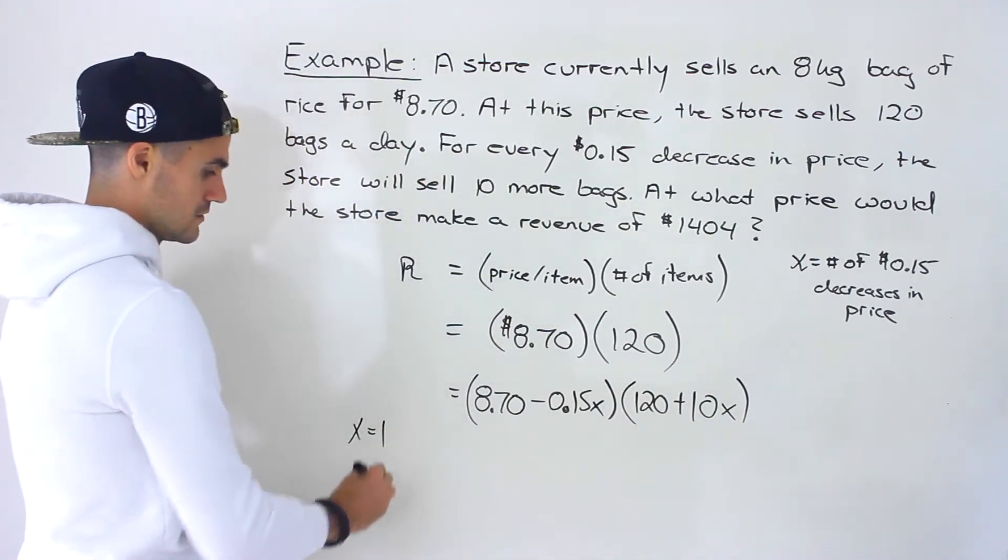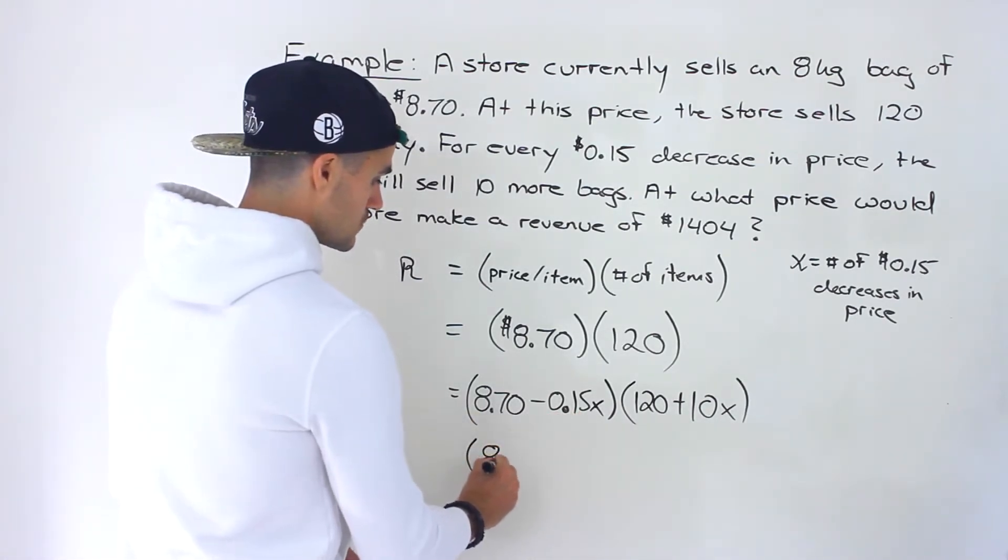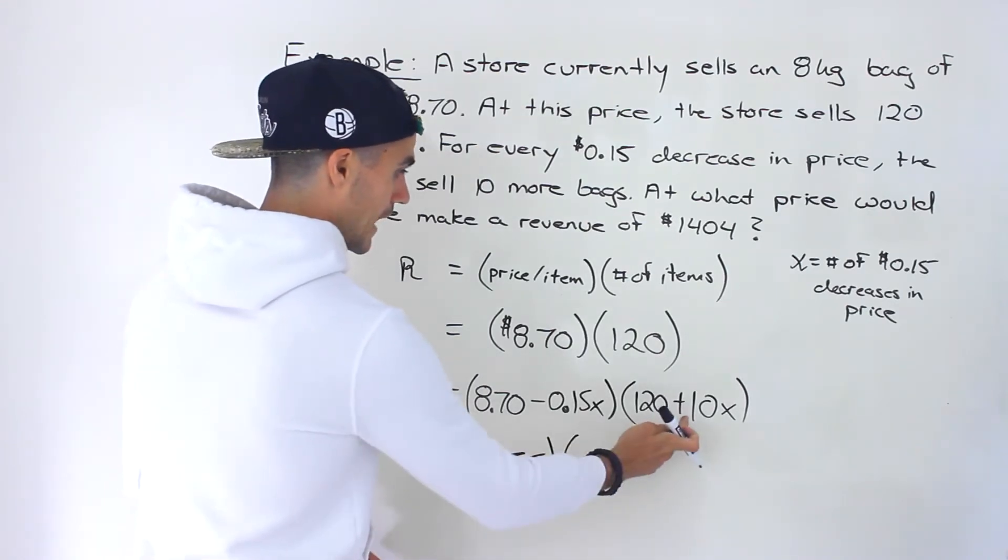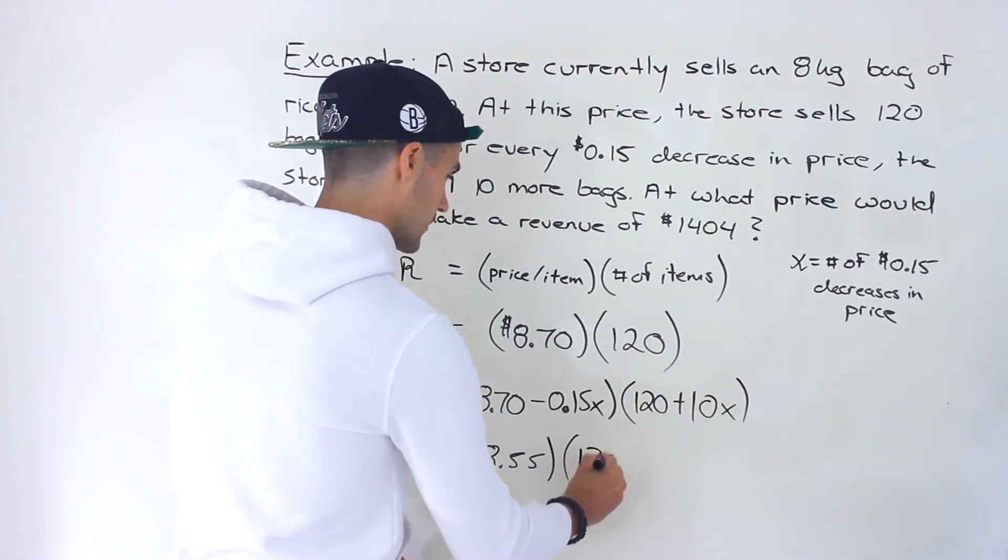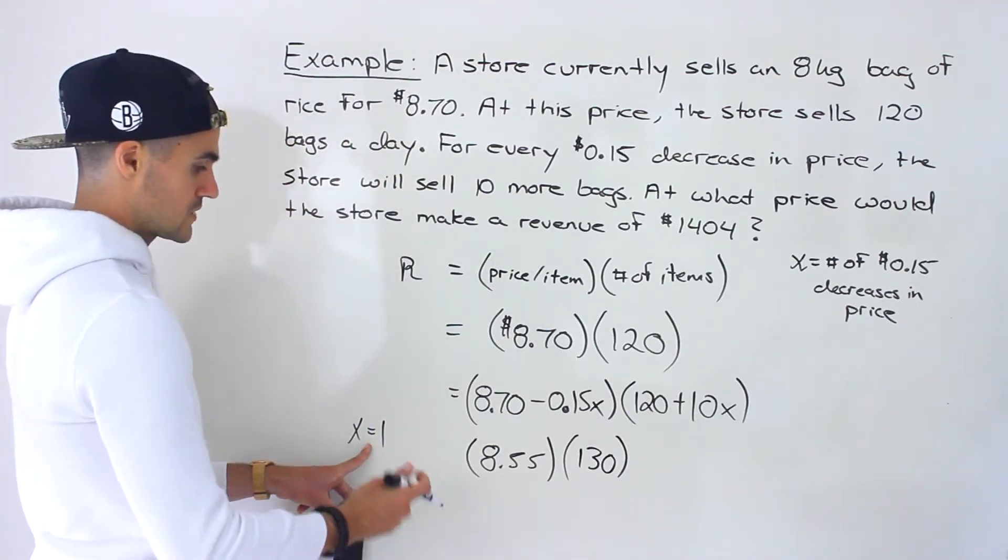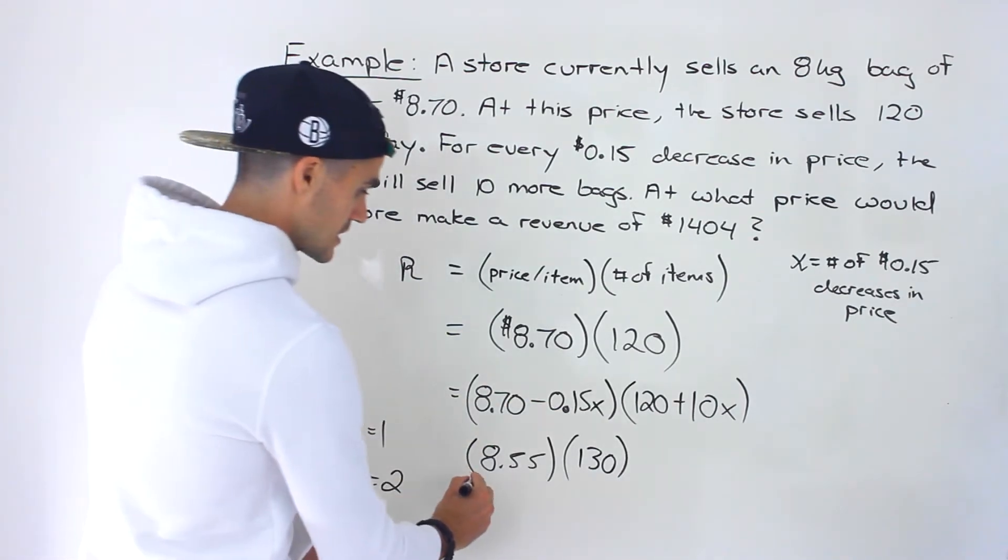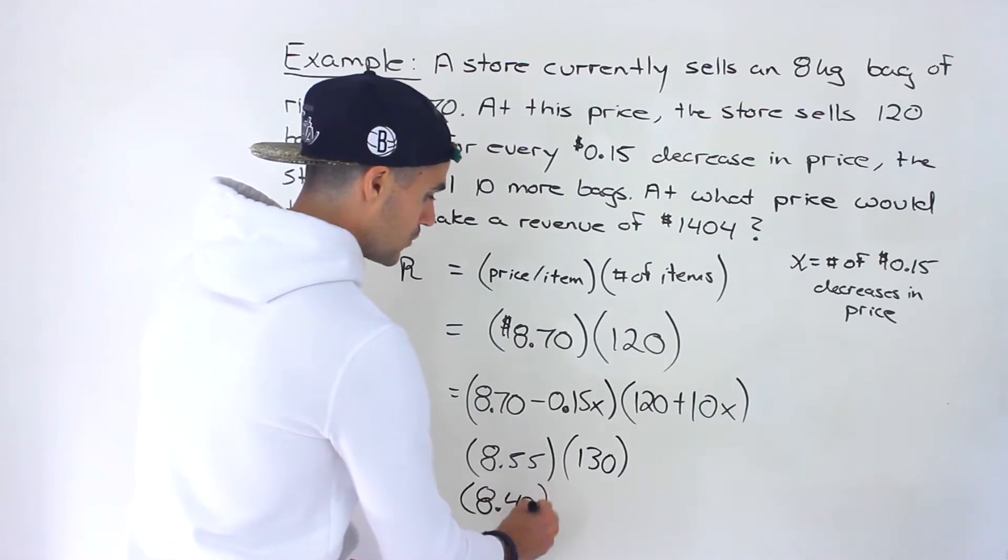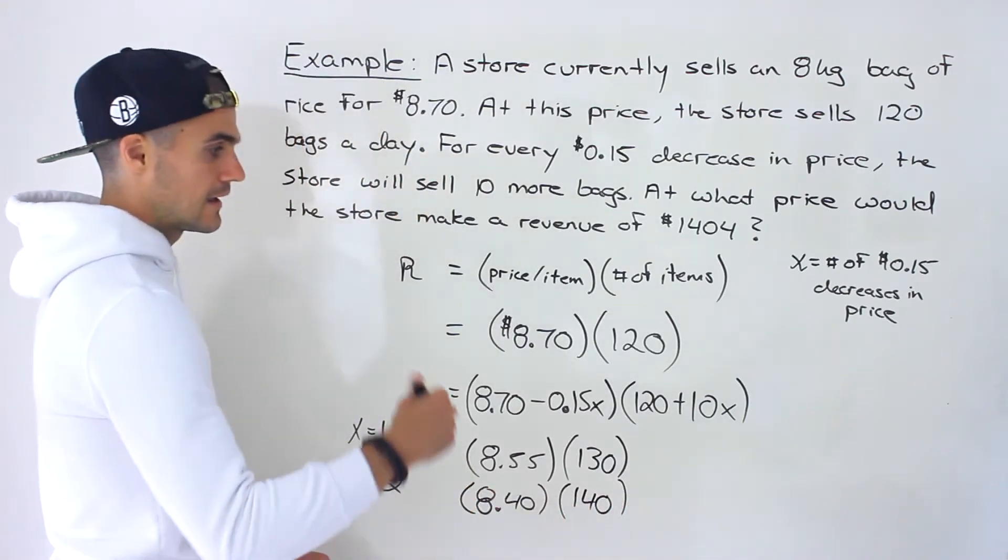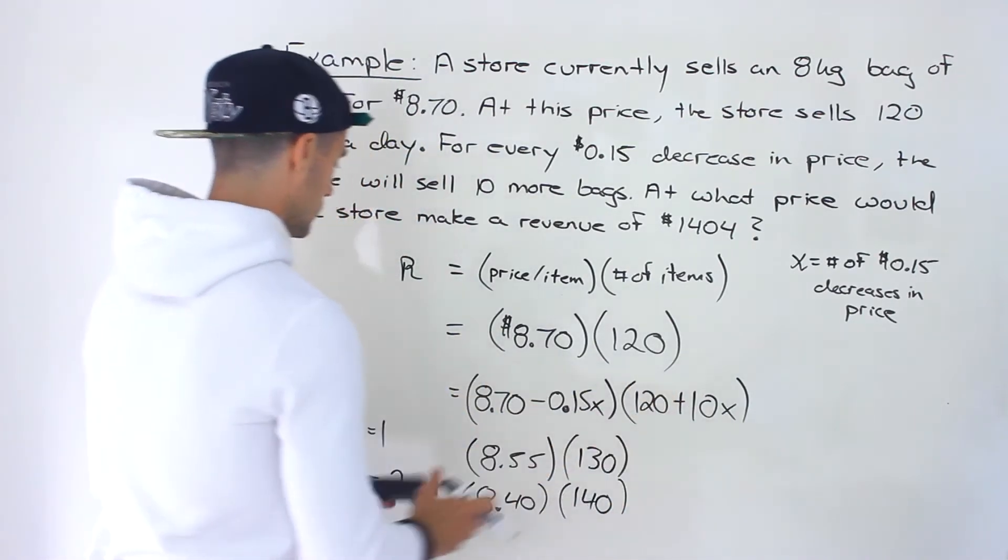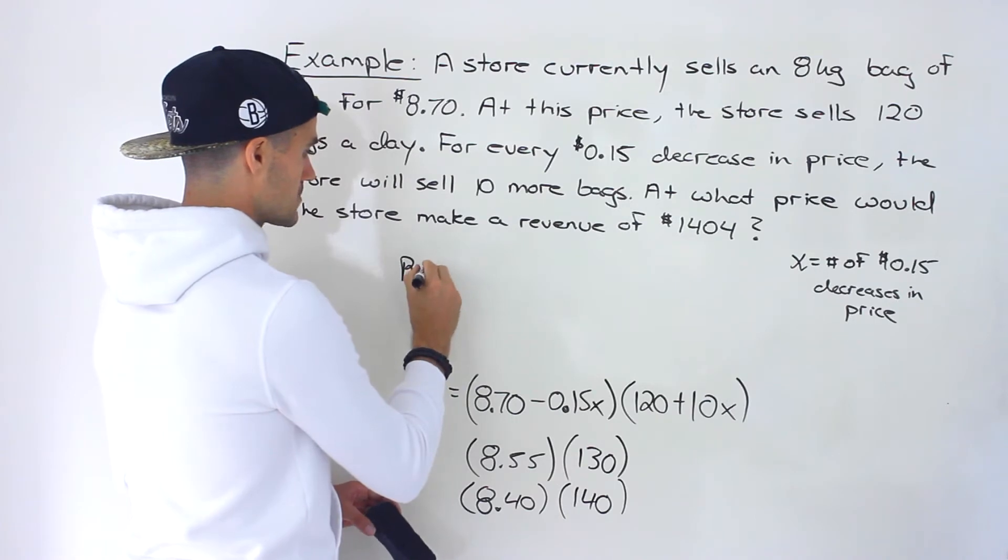So one more time, if X is one, that means that we're decreasing the price by 15 cents. So the new price would be $8.55. And then how many bags would we sell? We would sell 10 more bags. So that would be 120 plus 10 times one, which would give us 130. What if we decrease it two times, meaning we decrease it by 30 cents? Then we would have a price of $8.40, and then we'd sell 20 more bags. So then we'd have 140 over here. This is the general revenue function that we'd be working with in this particular case.